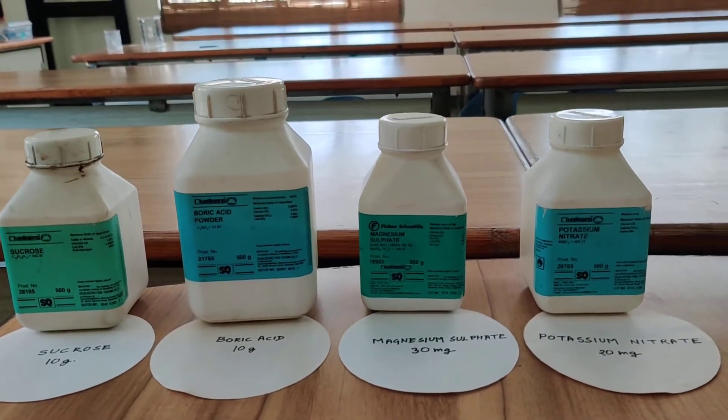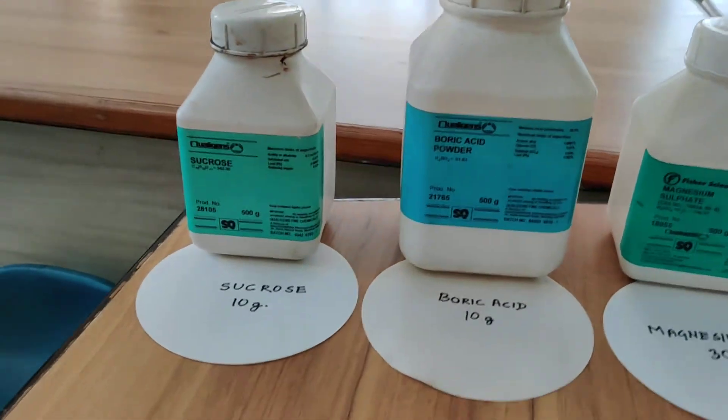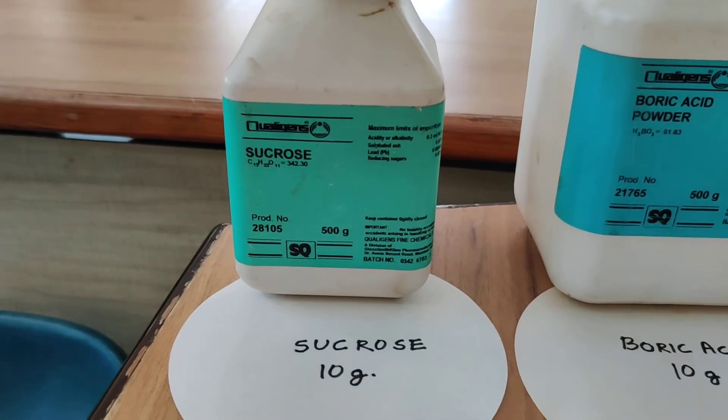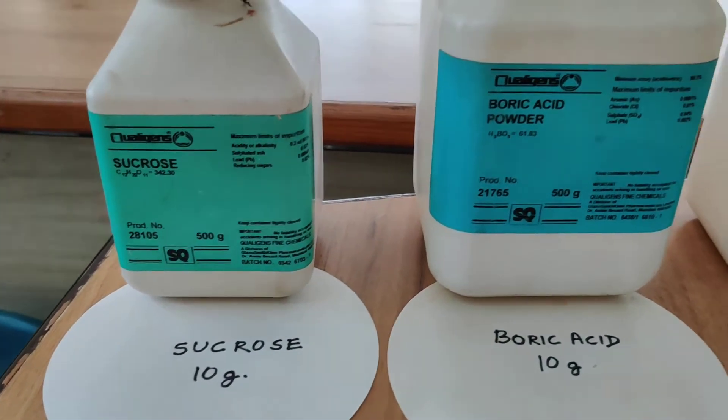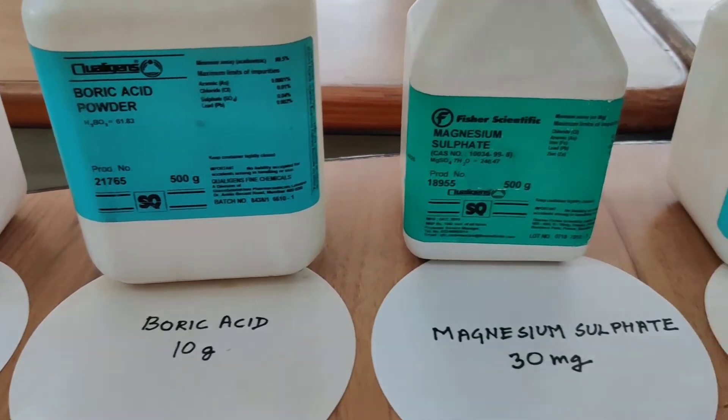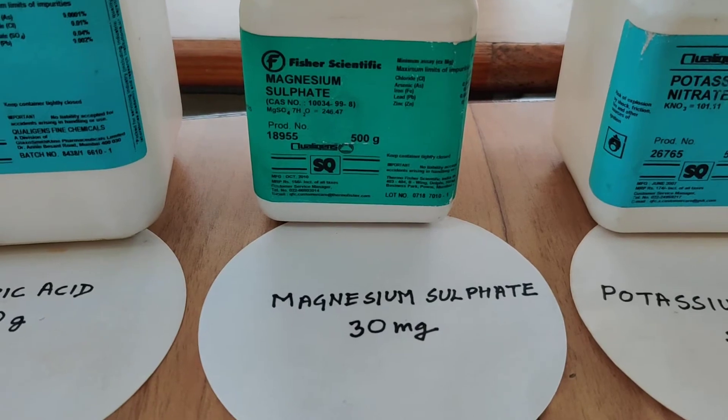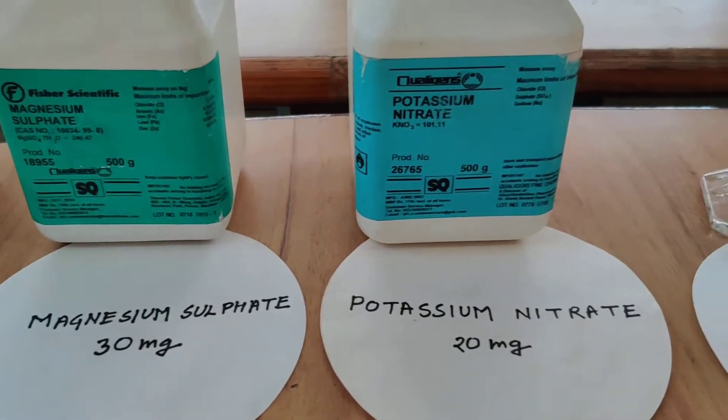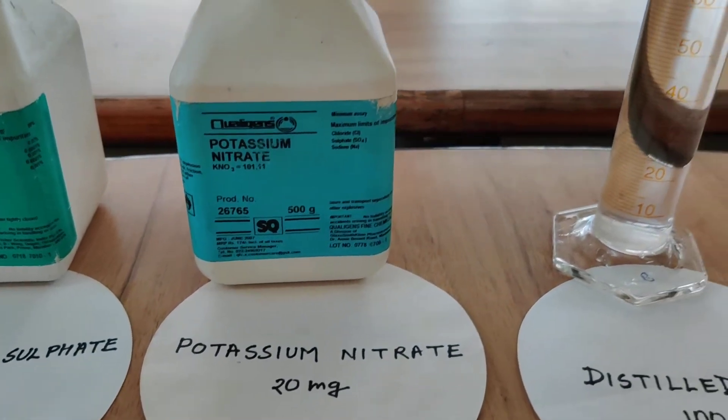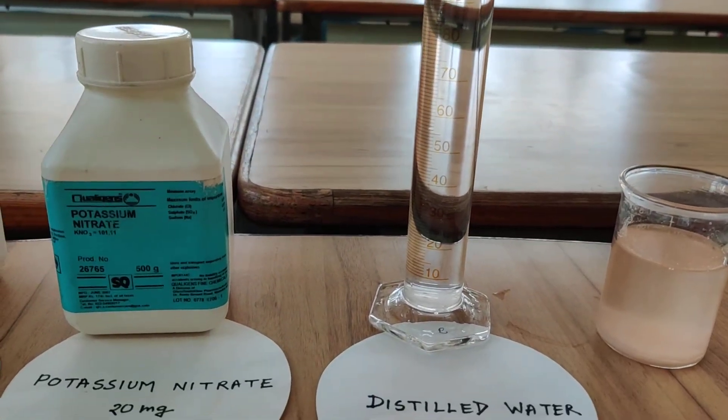For this experiment, as we have to prepare the nutrient solution, we need certain chemicals. The nutrients are: sucrose, 10 grams; boric acid, 10 grams; magnesium sulphate, 30 mg; and 100 ml of distilled water.